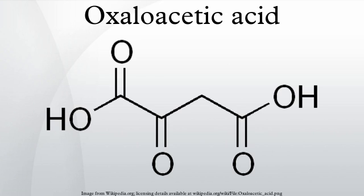Glyoxylate cycle: The glyoxylate cycle is a variant of the citric acid cycle. It is an anabolic pathway occurring in plants and bacteria, utilizing the enzymes isocitrate lyase and malate synthase. Some intermediate steps of the cycle are slightly different from the citric acid cycle. Nevertheless, oxaloacetate has the same function in both processes — acting as the primary reactant and final product. In fact, oxaloacetate is a net product of the glyoxylate cycle because its loop incorporates two molecules of acetyl-CoA.